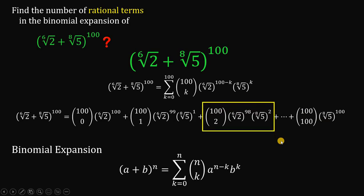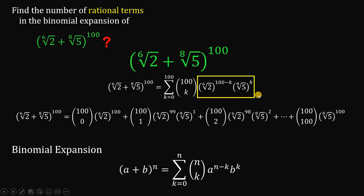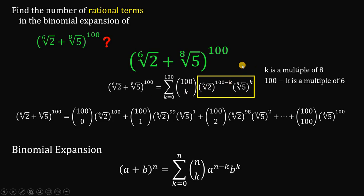Let's focus on one of its terms. The question is: in what way is ⁶√2 eliminated and ⁸√5 eliminated? The only way ⁸√5 is eliminated is if its exponent k is a multiple of 8, and the exponent of ⁶√2, which is (100 minus k), must also be a multiple of 6. So to solve this question, we need k to be a multiple of 8, and 100 minus k to be a multiple of 6.